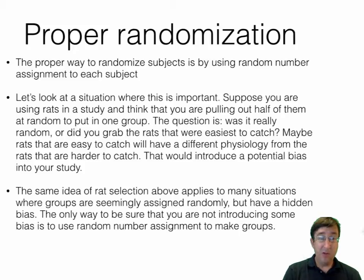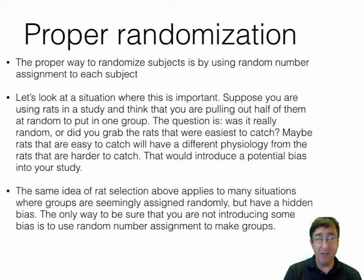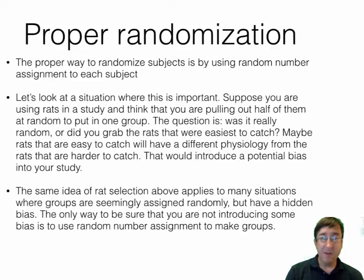Let's look at a situation where this is important. Suppose you're using rats in a study and think that you are pulling out half of them at random to put in one group. The question is, was it really random, or did you grab the rats that were easiest to catch? Maybe the rats that are easy to catch will have a different physiology from the rats that are harder to catch. That would introduce a potential bias in your study. The same idea applies to many situations where groups are seemingly assigned randomly, but have a hidden bias.